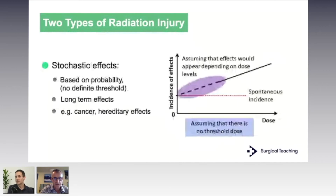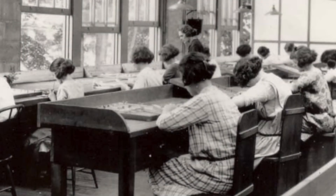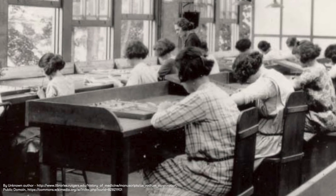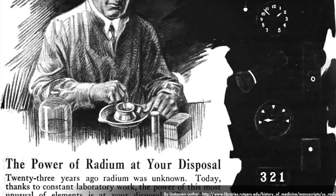The other type of effect — particularly carcinogenesis — is described by the strange term 'stochastic effects.' This is interesting because we don't expose patients to radiation doses that give them an individually high risk of cancer. We can't really use medical radiation data to see what effects we're having, as our doses are relatively low compared to the nuclear industry or nuclear disasters. Historically, in the 1930s, there were workers — all women — who would paint clock and watch hands with radium paint to make them glow in the dark, and they would lick their paintbrush to form a fine point.